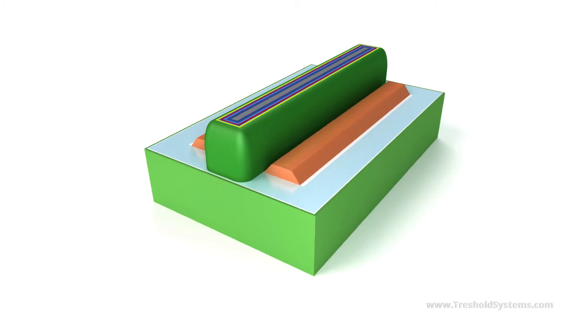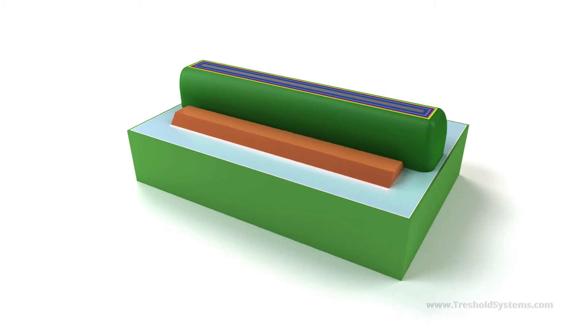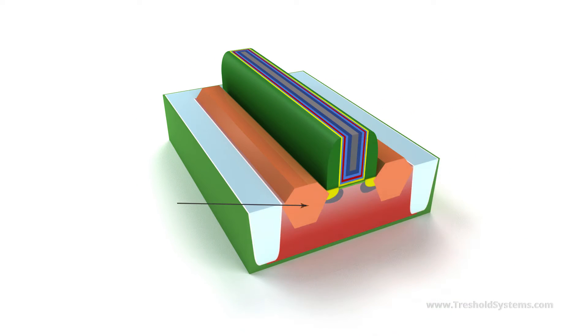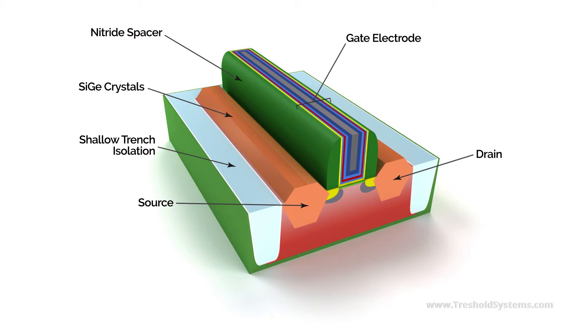We begin with the classical MOSFET transistor displayed in this cutaway view. It consists of the standard elements: the source, the drain, the gate electrode, the silicon-germanium crystals, the nitrite spacers, the shallow trench isolation, the well, the high-K dielectric, and the replacement gate metallization.